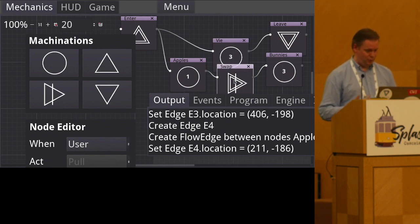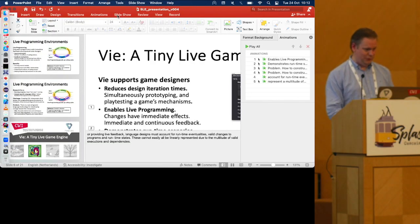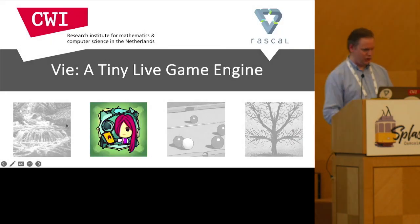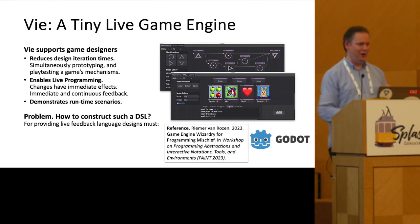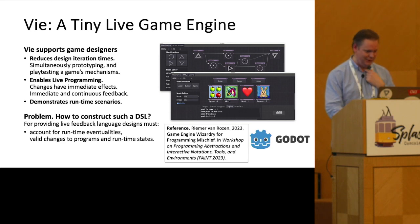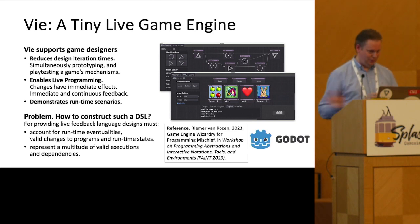We now have a tiny game. It is live programming because it integrates runtime state, effects, and feedback all in the same view in a rather understandable manner. We don't have to press run or execute things — it just always runs. Next time, I will make a movie and not do the live programming. For providing live feedback, such DSL designs must account for runtime eventualities — valid changes to programs and runtime state — representing a multitude of valid executions and dependencies.